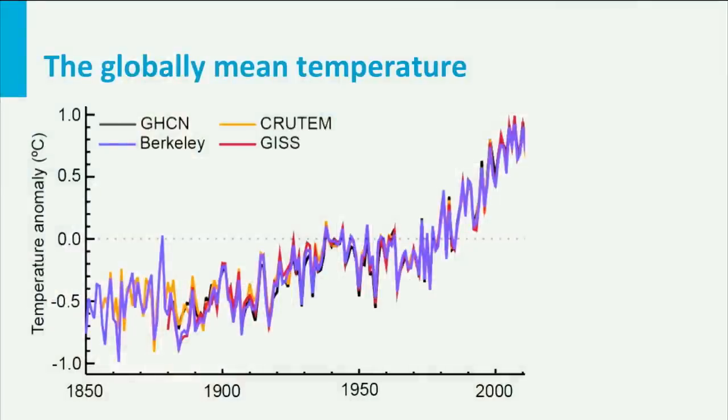Let's start with the record of the globally averaged temperature of the last 165 years, as it is measured above the land surface. In this graph we see the so-called temperature anomaly — the deviation of the mean temperature on Earth in a given year from the mean temperature of the reference period 1961–1990. Although the graph is based on different data sets and methods, they all agree quite well.